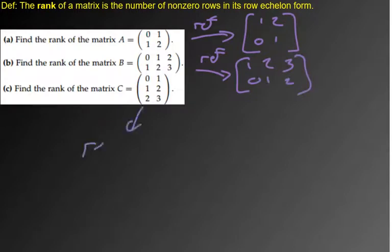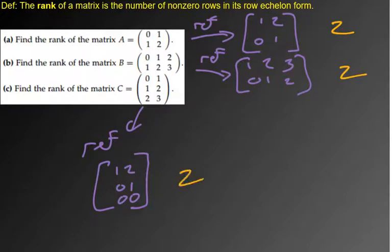If you REF this one, then you would get, actually, I just did it earlier. So I have it right here. You get a row of zeros there at the bottom. But if you just count literally the number of non-zero rows in the row echelon form for this one, it's two. This one, it's two. This one's also two.